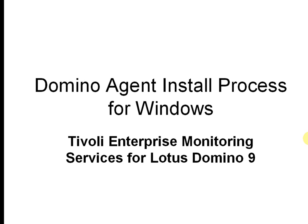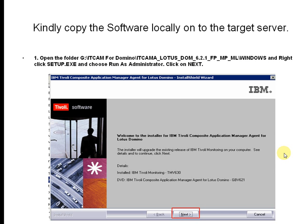First step: copy the software to the local server on which you are going to install the Lotus Tivoli agent. Copy the file from a particular location, then find the setup.exe file, right-click on it, and run as administrator.